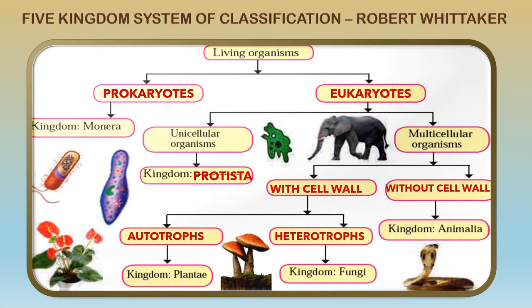Those multicellular organisms without a cell wall give us the fifth kingdom — kingdom Animalia — which we are going to study about in this video. So the five kingdoms are Monera, Protista, Fungi, Plantae, and Animalia, as given to us by Robert Whittaker.